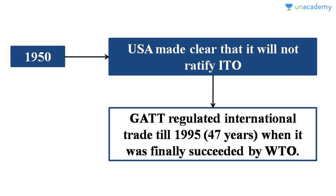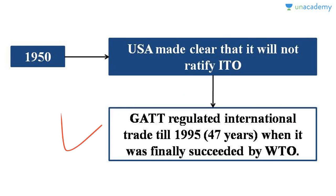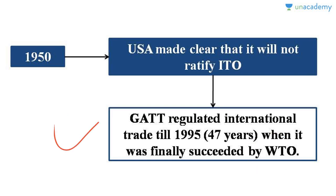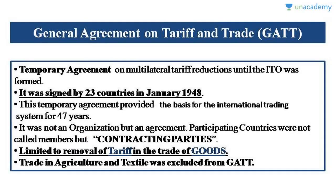By 1950, the US Congress made it clear that ITO was not going to be ratified. So regulating international trade completely came under the responsibility of GATT. GATT regulated international trade for another 47 years until 1995, when finally an international organization — WTO — was formed.